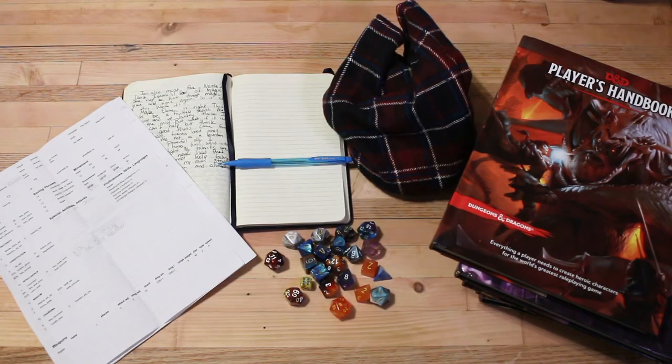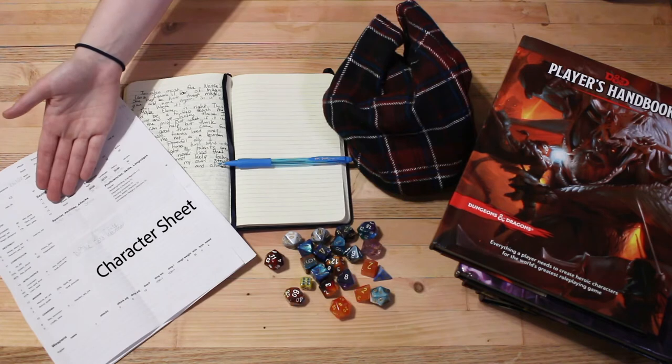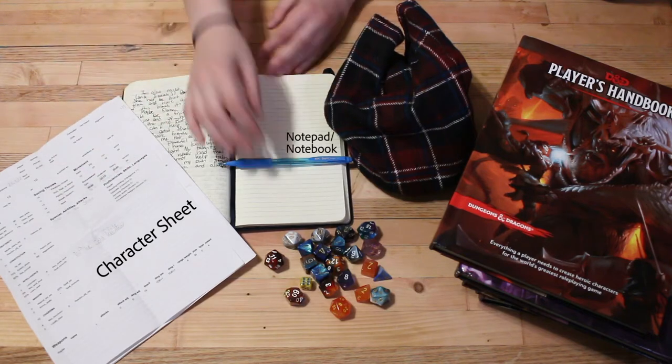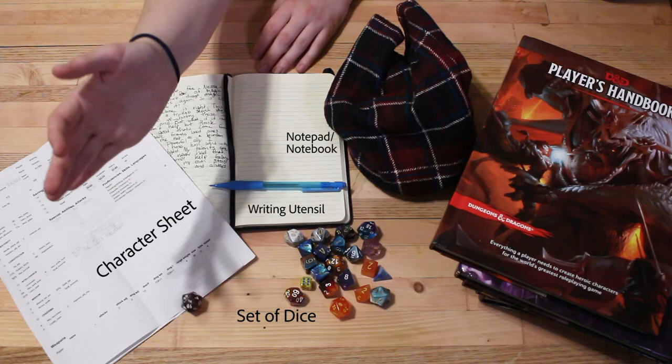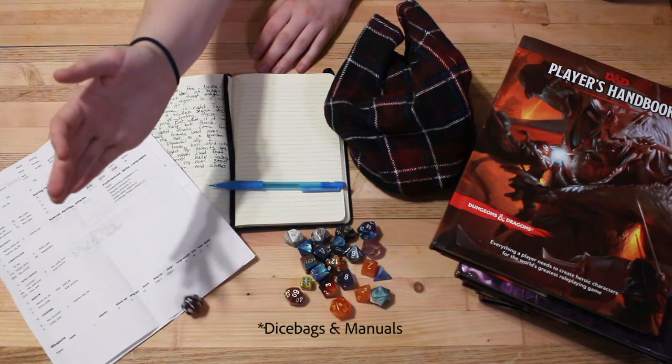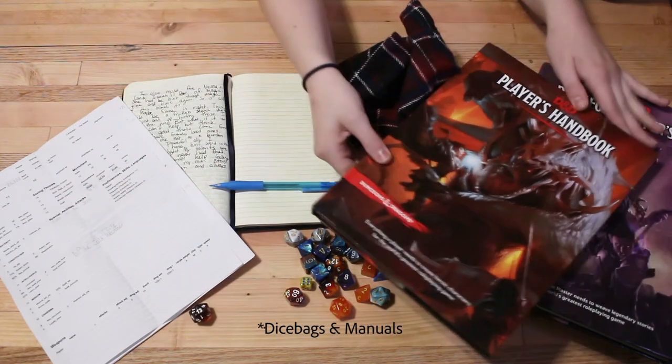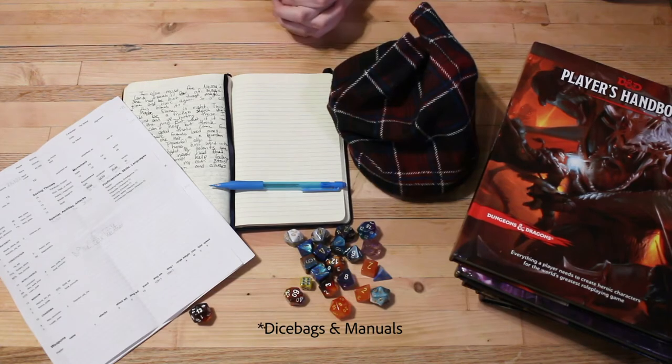Before we get started, you'll need the following supplies. A character sheet, which can be found on a variety of websites such as Reddit, Pinterest, or Google Images. A notepad or notebook, a writing utensil, and a set of dice, which are usually found at comic book stores or online retailers. Dice bags and manuals are not required, but are recommended to enhance your D&D experience.